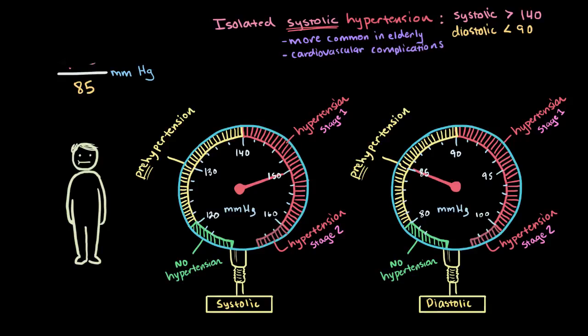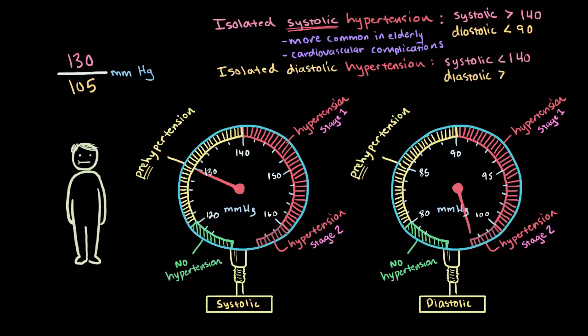And I'm sure you can see where I'm going next, right? What if my blood pressure is measured at 130 over 105? So I'm in the pre-hypertension range for systolic and stage 2 hypertension for diastolic. As you probably guessed, this is known as isolated diastolic hypertension. So the hypertension is limited to the diastolic pressure only. This one is actually more common in younger patients that tend to be obese or overweight. However, it's not typically associated with underlying cardiovascular complications, like isolated systolic hypertension is.